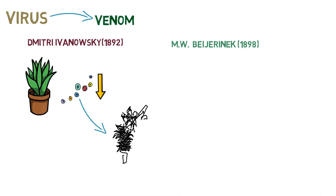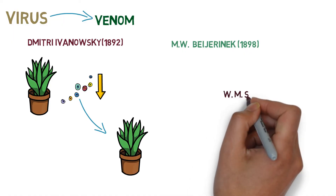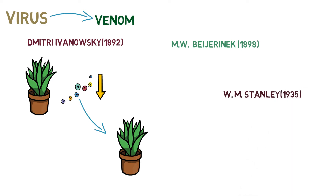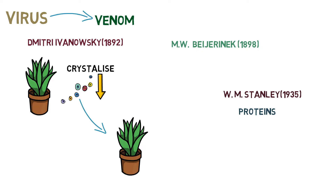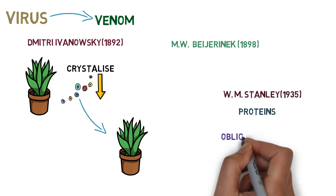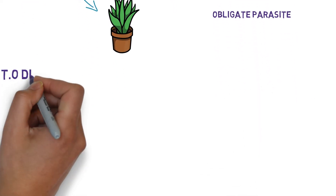Beijerinck inserted these microbes into a healthy tobacco plant, and it was also converted into a diseased plant. After that, another scientist, W.M. Stanley, crystallized the microbes and realized they were made of proteins. Stanley also coined the term obligate parasites.